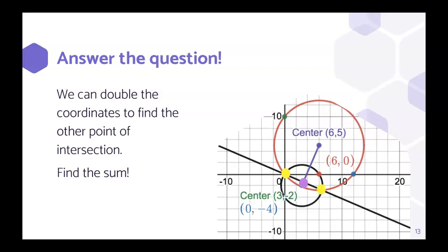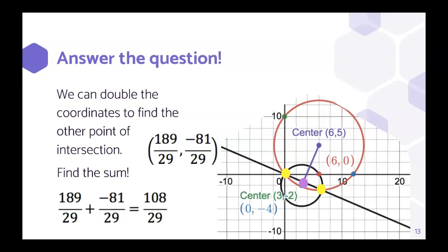So if we double those coordinates and then find the sum, we will have answered our question. Doubling the coordinates, we get 189 over 29 for the x or the a coordinate and negative 81/29 for the y or the b coordinate. Simply add them together and we get 108 over 29, which is the final answer to this problem.